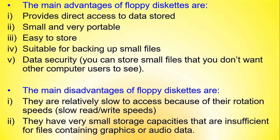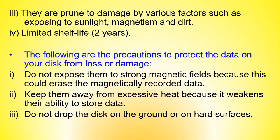The main advantages of using floppy diskettes were: they provided direct access to data; they were small and very portable; they were easy to store; they were suitable for backing up small files; and they had improved data security since you could store small files that other users couldn't see. Disadvantages included: they were relatively slow to access due to slow rotational speed; they had very small storage capacities insufficient for files containing graphics or audio data; they were prone to damage from sunlight, magnetism, and heat; and they had a limited shelf life of about two years.